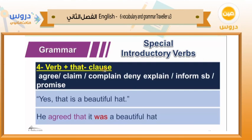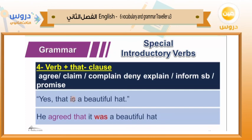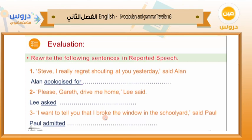Some introductory verbs also come with 'that' plus a clause: agree, claim, complain, deny, explain, inform, promise. Example: 'Yes, it is a beautiful hat' — we say 'He agreed that it was a beautiful hat.' We keep the clause but add 'that', change 'is' to 'was', and choose 'agreed' because the response is 'yes'. So 'are' becomes 'were' and 'is' becomes 'was' in such clauses.